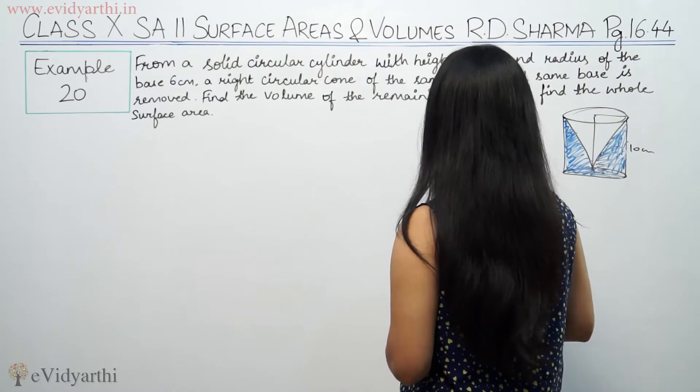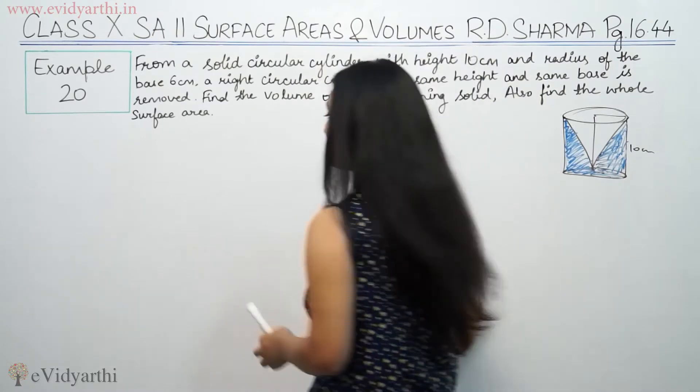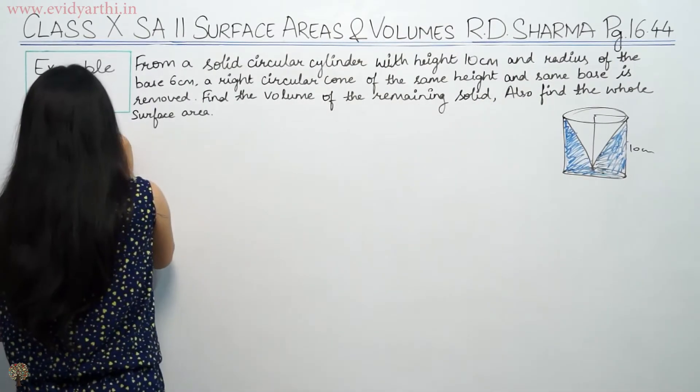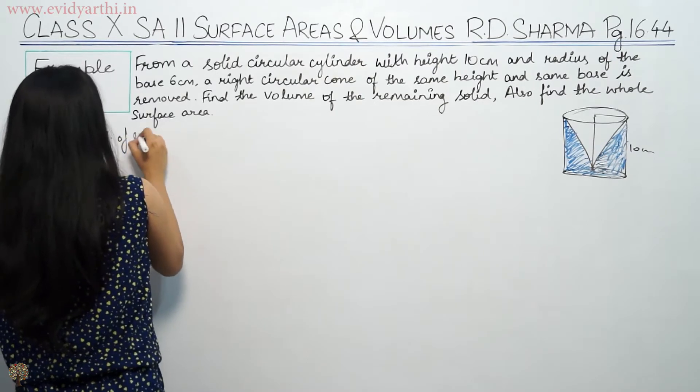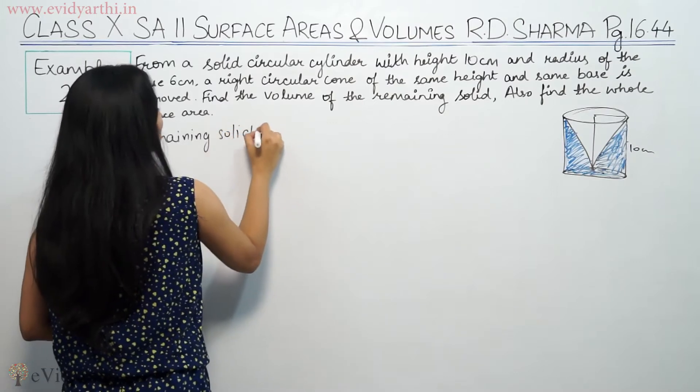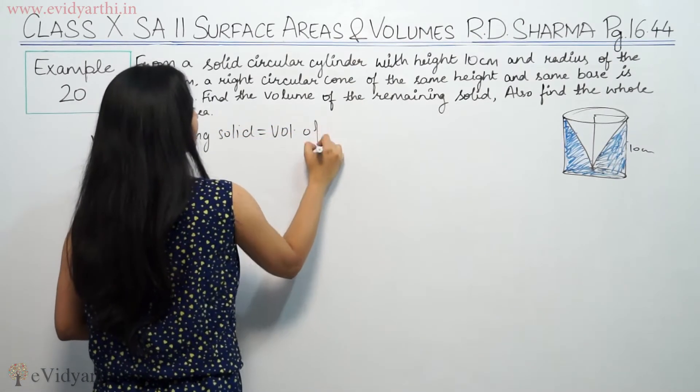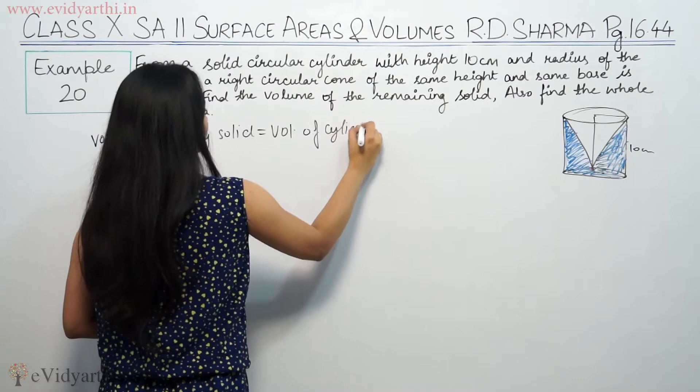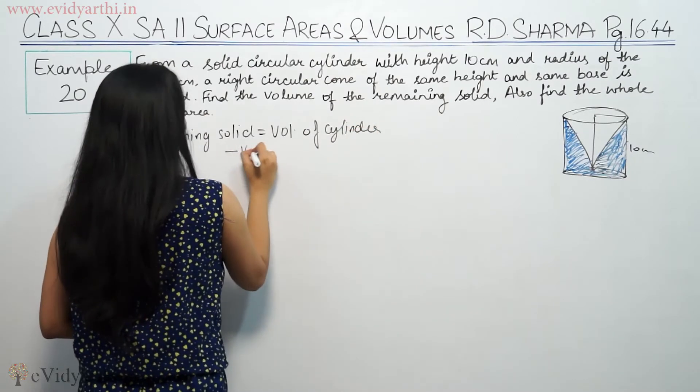Find the volume of the remaining solid. The remaining solid volume equals volume of cylinder minus volume of cone.